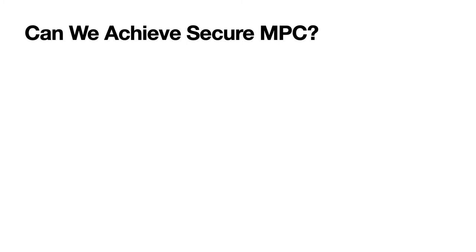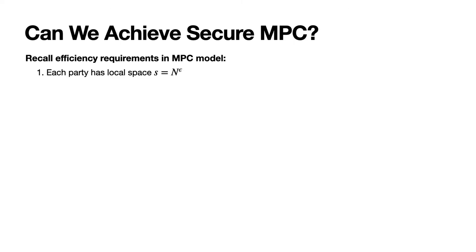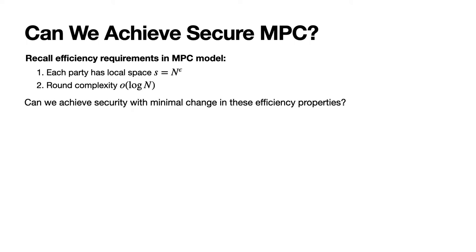The natural question is: can we actually achieve this definition of security in the MPC model? We have two requirements: first, the local space of each party is limited; second, the round complexity is very small. So the question is, if we have an insecure MPC protocol that computes some functionality f, can we transform it into a secure version of the protocol that computes the same functionality while still respecting these two requirements?